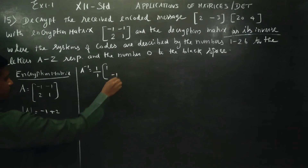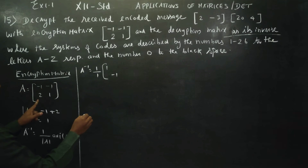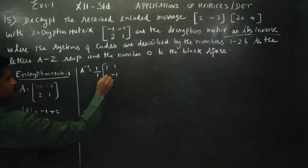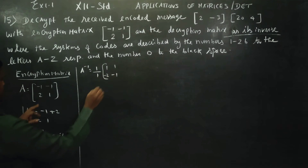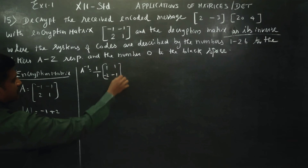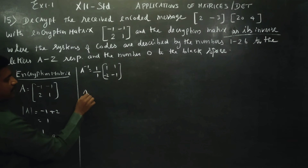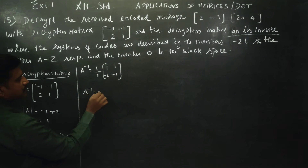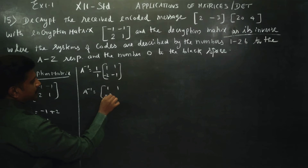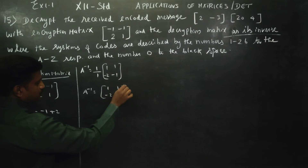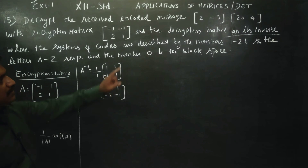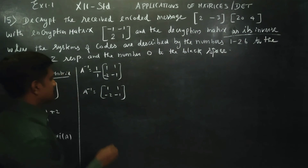To find the adjoint, we interchange the diagonal elements and change the sign of the off-diagonal elements. Therefore A inverse equals 1, 1, minus 2, minus 1. This is our decryption matrix.